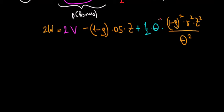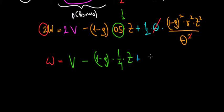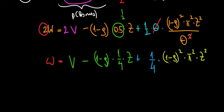What math can we do? We can cancel out theta — theta with theta goes away. Now we divide both sides by 2, since we want wage alone on one side. The wage equals 2V divided by 2, which is just V, minus 1 minus rho multiplied by 0.5 divided by 2 — that's 1 over 4 times the bonus Z. On the last term we have plus 1 over 4 times 1 minus rho squared times P squared times Z squared divided by theta.